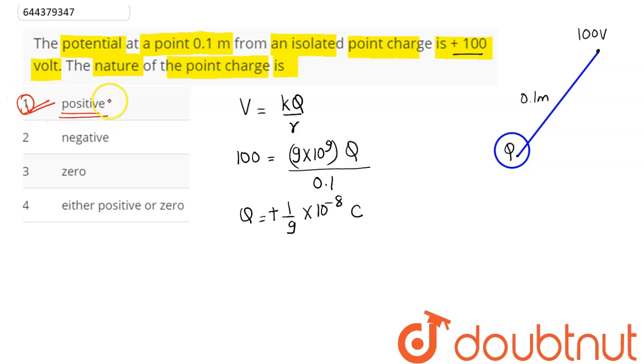Among the four options, since it produces a positive potential at this point, the nature of the point charge is positive. Hence option number 1 is the correct answer. So 1 is our answer.